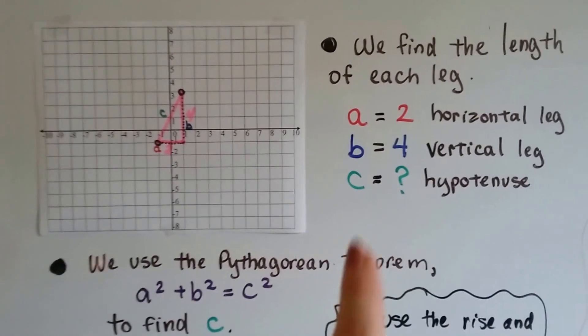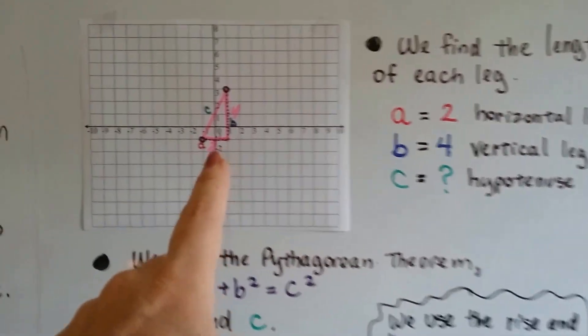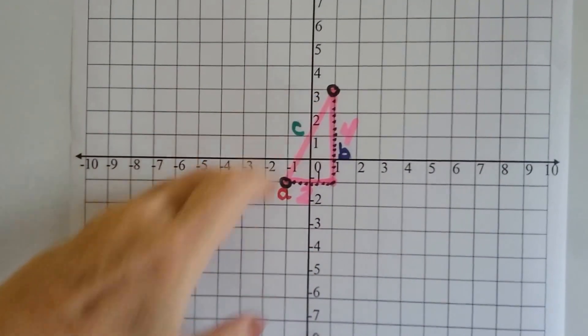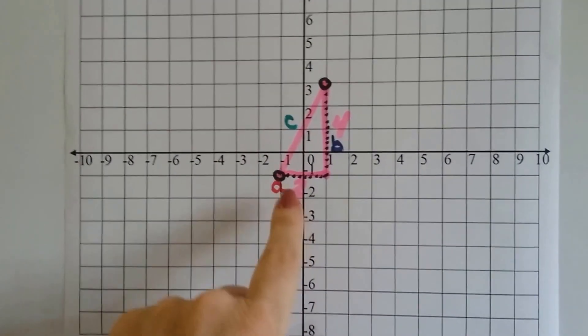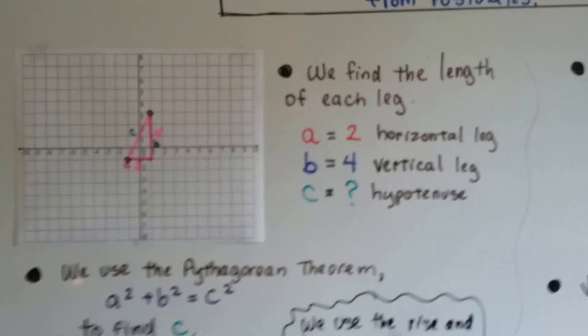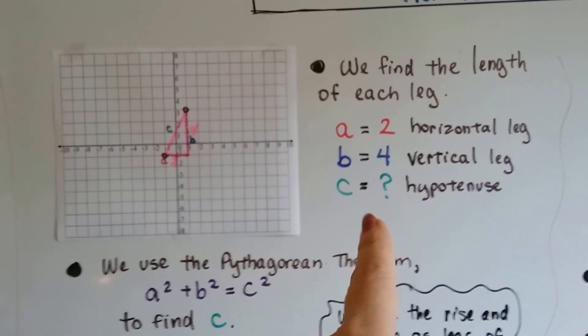So what we do is we find the length of each leg. We count this. We see there's one, two, three, four units here and one, two units here. So a is going to be two and b is going to be four. See that? That's the horizontal leg and the vertical leg. We need to find the hypotenuse.